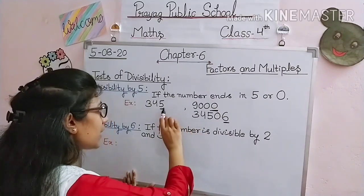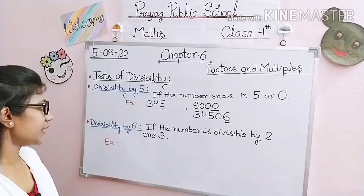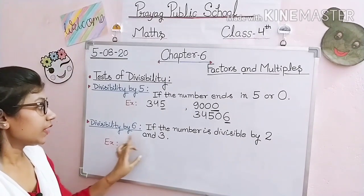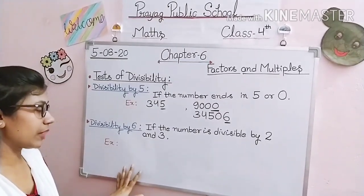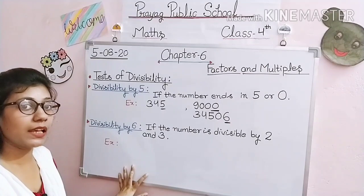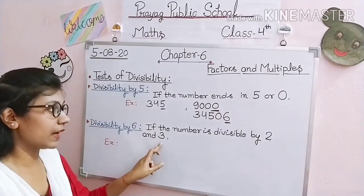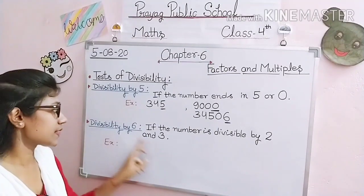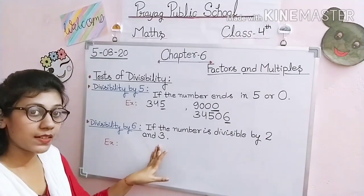So the rule for divisibility by 5: if the given number ends in 5 or 0, only then that number is divisible by 5. Next topic is divisibility by 6. How do we check whether any given number is divisible by 6? If the given number is divisible by both 2 and 3, then the given number is also divisible by 6. If it is divisible by only one of them and not the other, then it is not divisible by 6.